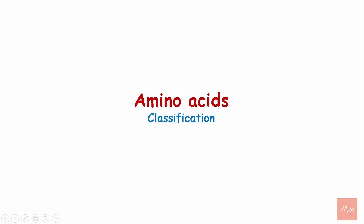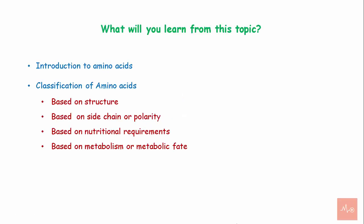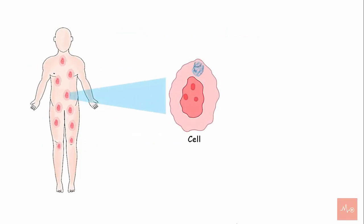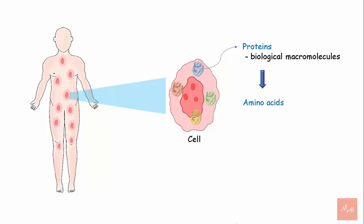Introduction to amino acids classification. In this topic, you will learn about the introduction to amino acids and their classification based on structure, side chain polarity, nutritional requirements, and metabolic fate. The human body is made up of numerous cells, and virtually every process in the cell is mediated or controlled by proteins, also called biological macromolecules. Amino acids are involved in maintaining the structural and functional aspects of cells and the body.